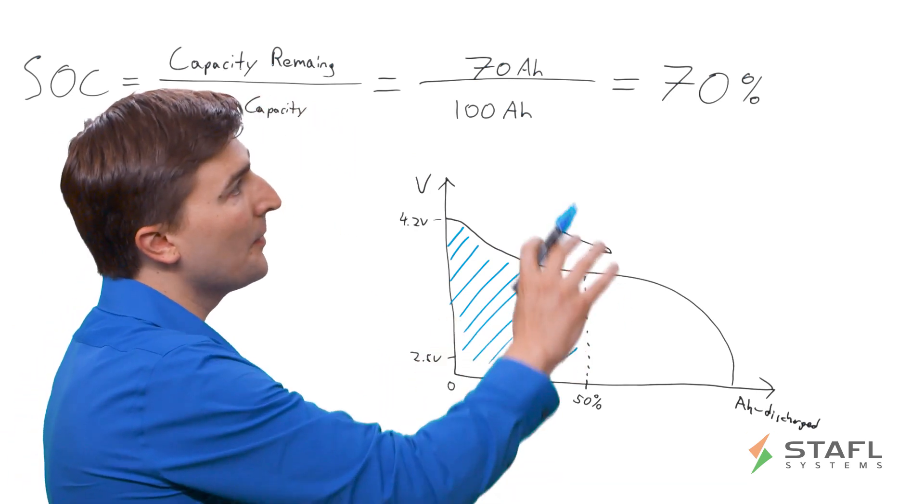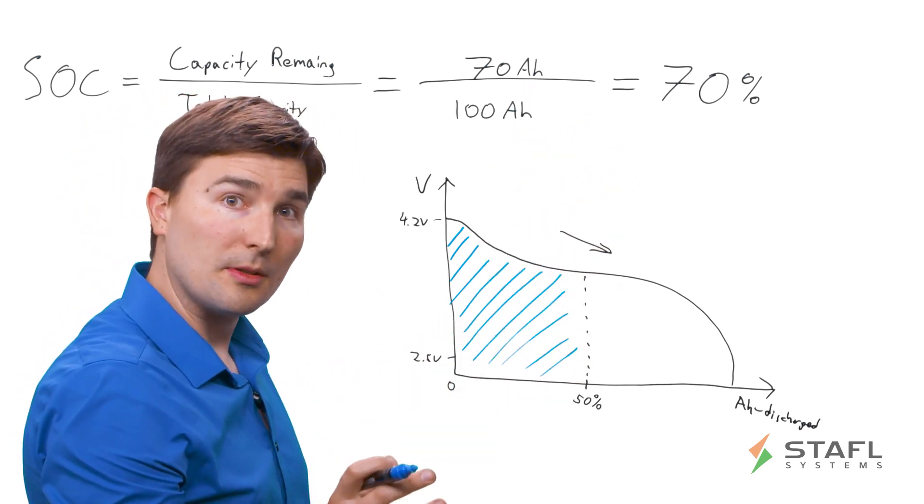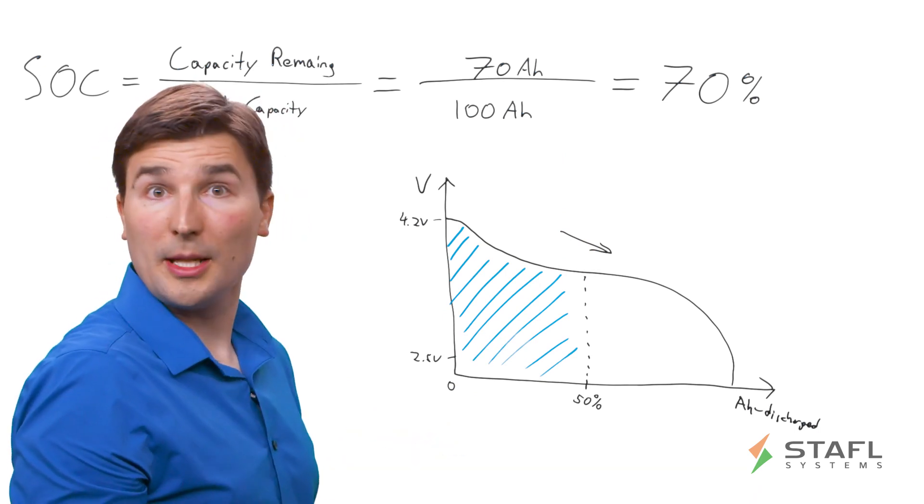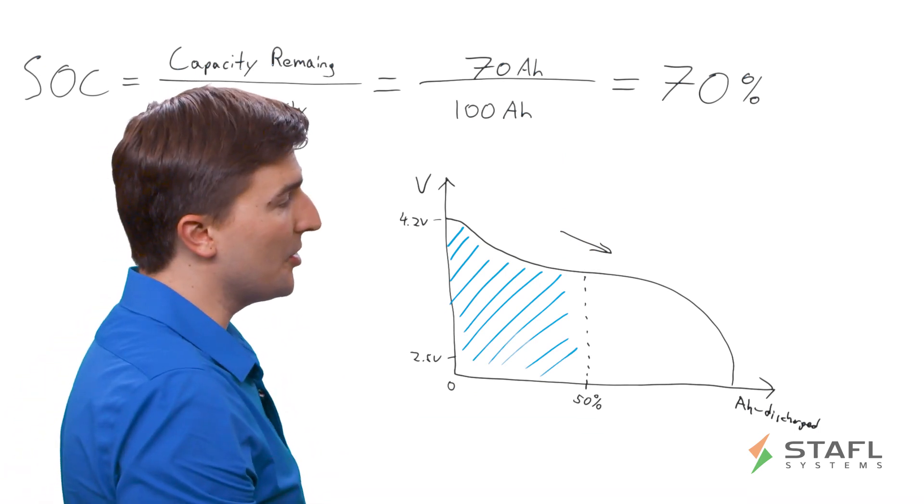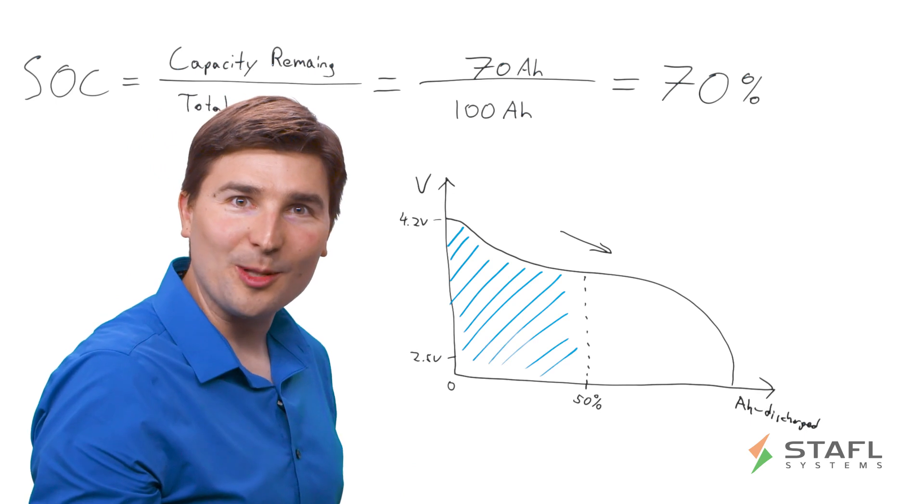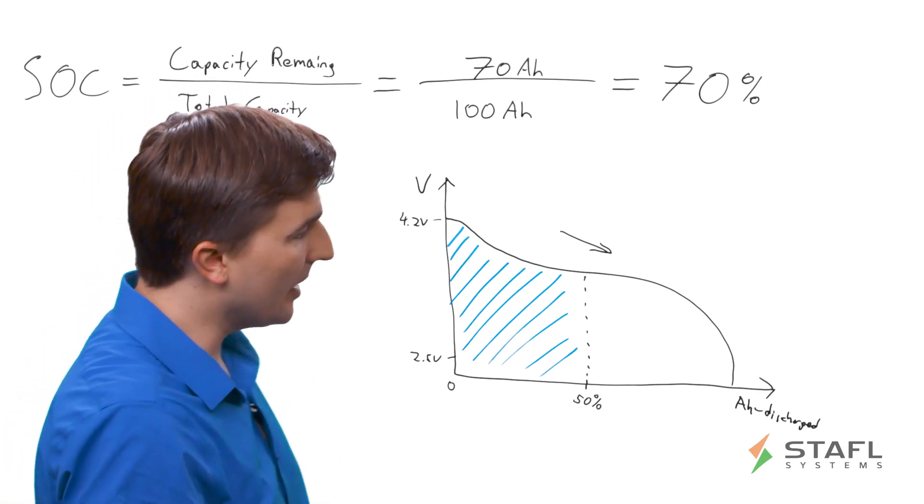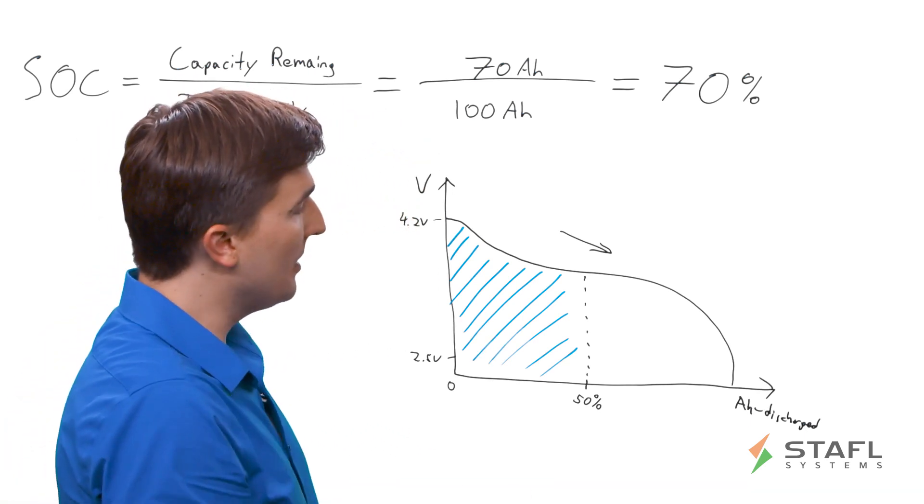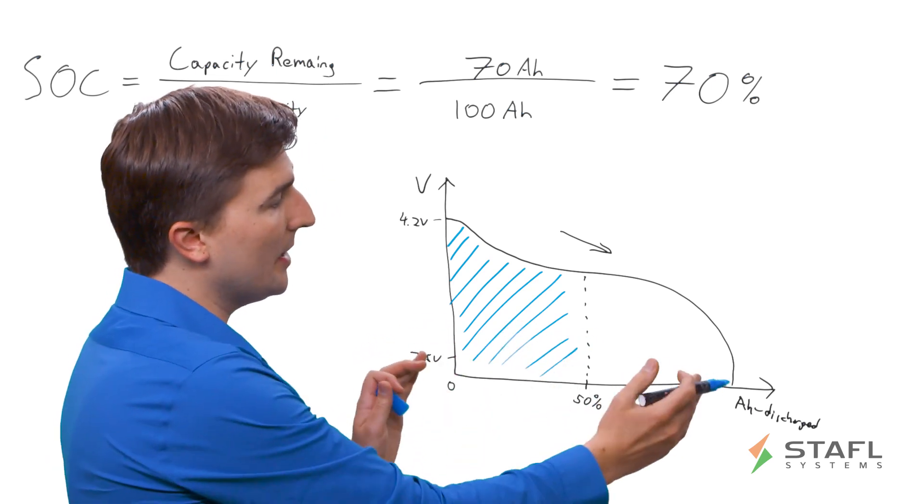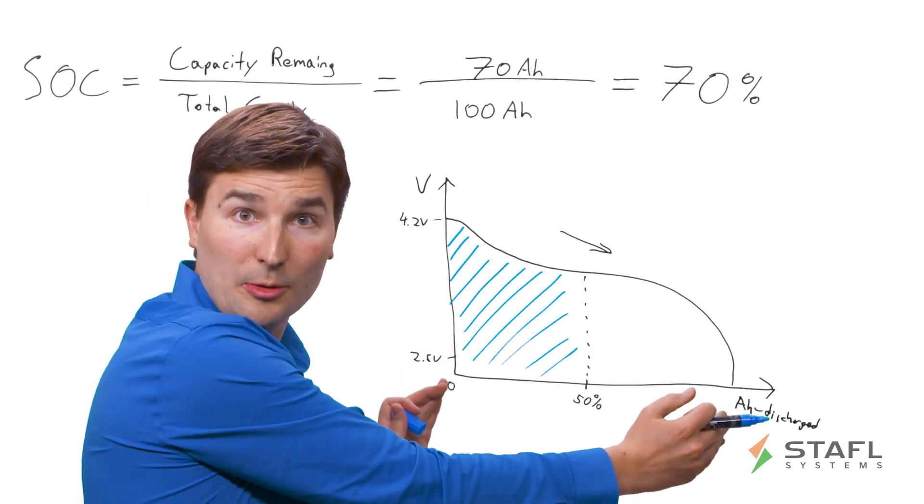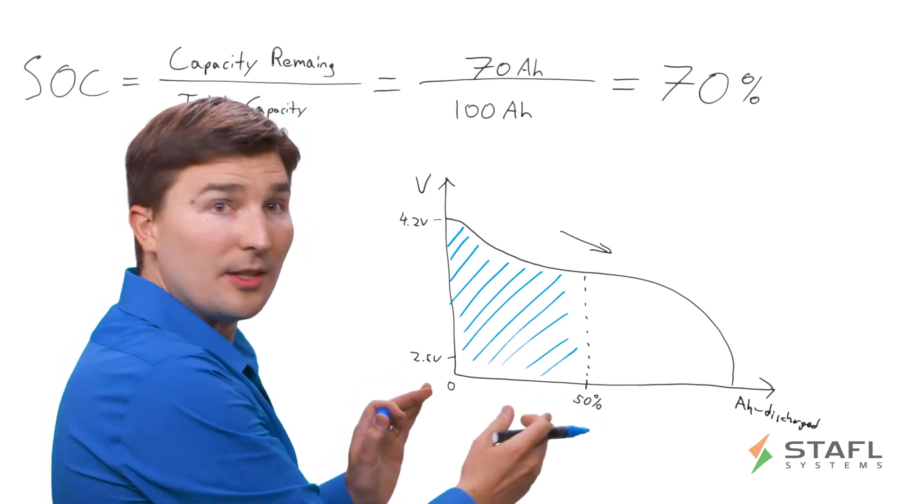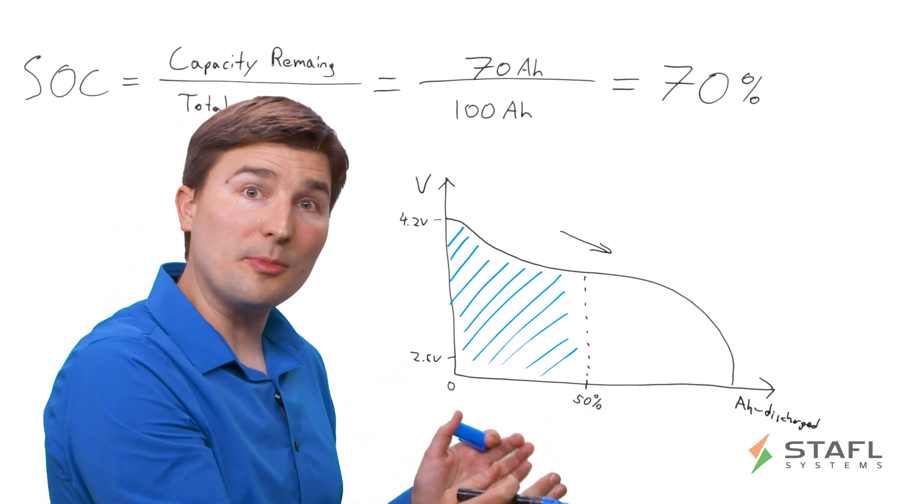Typically, if you want to get a fuel gauge, if you want to use a fuel gauge, for example, from an electric vehicle application or most applications, you're more interested in the energy available as opposed to the capacity. For example, if we were doing an electric vehicle design, and we were trying to determine, okay, this is a 200 mile range. At what state of charge would you have 100 miles of range remaining?